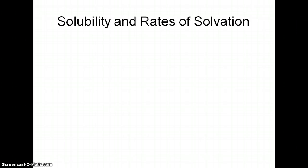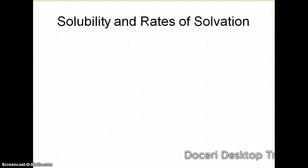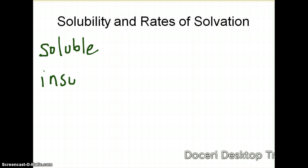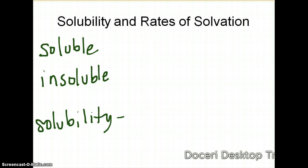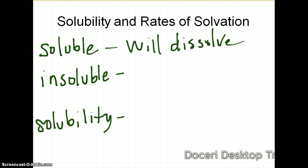Our next topic is solubility and rates of solvation. There are three words that a lot of people get confused, so make sure you know them: soluble, insoluble, and solubility. Soluble simply means a solute will dissolve in a solvent. Insoluble means it won't dissolve.